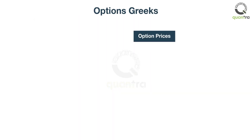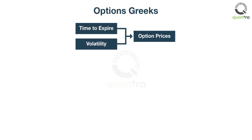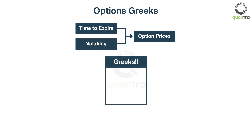Now, if you knew how fast the option premium changes with respect to time or volatility, wouldn't it be great? The options Greeks help you with this. You will learn about delta, gamma, theta, vega, and rho in this course as well.